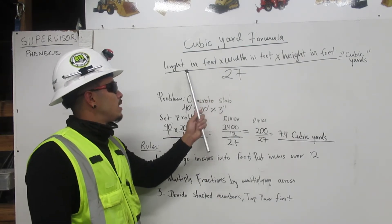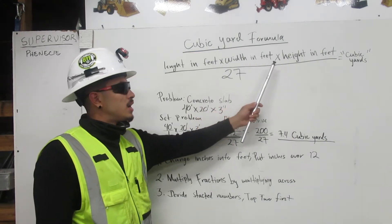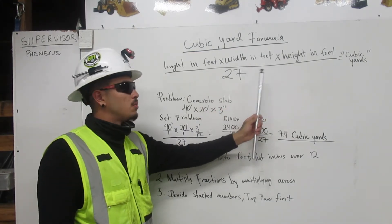Here's the formula. Length in feet times width in feet times height in feet over 27, which equals cubic yards.